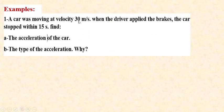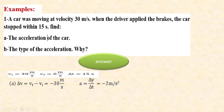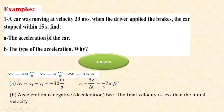Example: A car was moving with velocity 30 meters per second — considered the initial velocity. When the driver applied the brake, the car stopped after 15 seconds. Stopped means final velocity is zero, and time given is 15 seconds. Part A: find the acceleration of the car. Part B: what is the type of acceleration and why? Answer: initial velocity is 30 m/s, final velocity is zero, delta t is 15 seconds. Applying the rule — acceleration equals delta v over delta t — gives negative 2 meters per second squared. It is negative because final velocity is less than initial velocity.